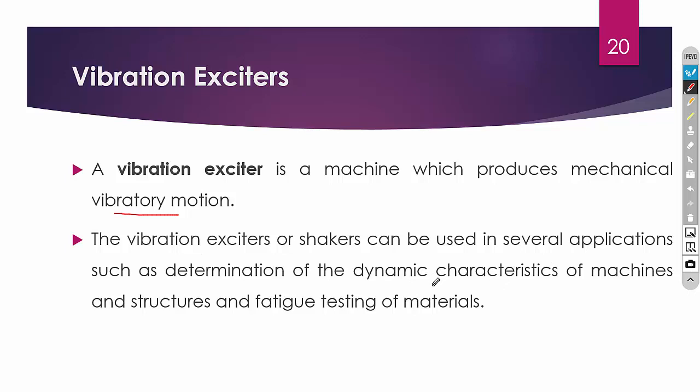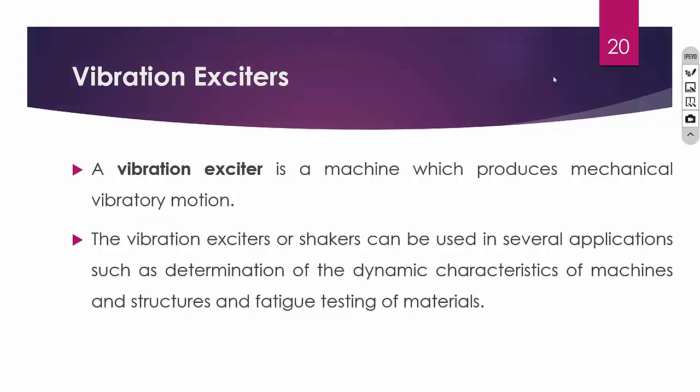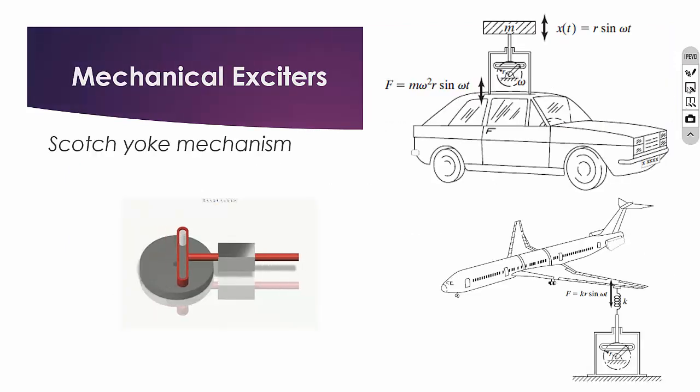The purpose of using an exciter is to identify the dynamic characteristics of machines and structures, or for testing purposes. For example, if you are producing a new material and want to test the dynamic behavior of that material, you have to excite the system externally. In that case, the vibration exciter is used to produce artificial vibration. So vibration exciters are mostly used for testing purposes.